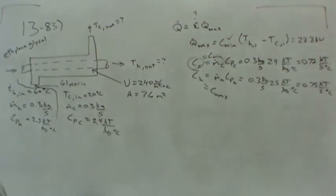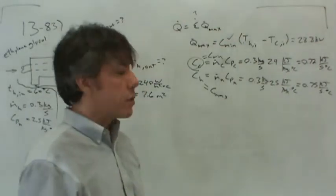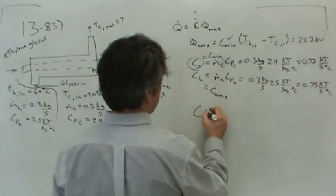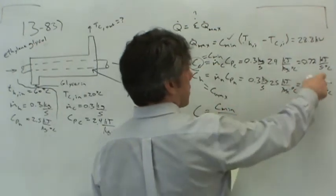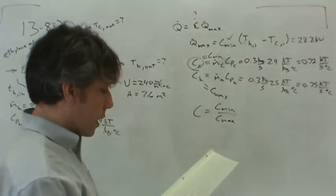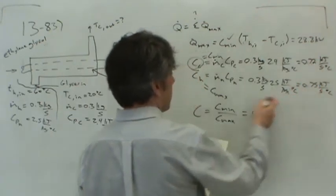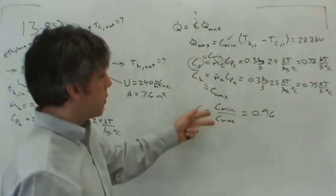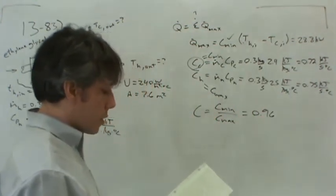On page 792 there are equations giving effectiveness in terms of the number of transfer units and the capacity ratio. The capacity ratio is just C_min over C_max. It turns out to be 0.96 when you plug in these two capacity rates — it's close to one, as expected, since it's a non-dimensional ratio.